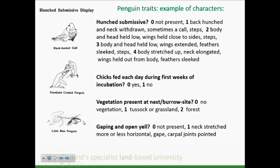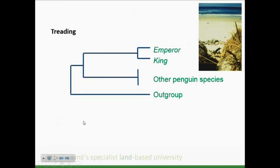There are various types of behaviors we can measure: whether chicks are fed every day during the first weeks of incubation, things that result from behavior such as whether vegetation is present at the nest site or burrow - it's actually a behavioral decision to nest next to a tree - and simpler behaviors like an aggressive behavior called gaping, whether it's present or not. We can take those behaviors and look at how they might have evolved.